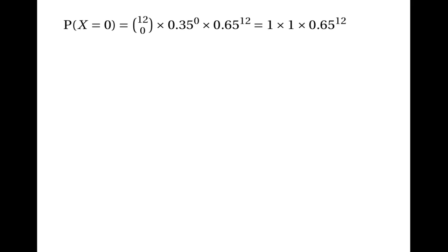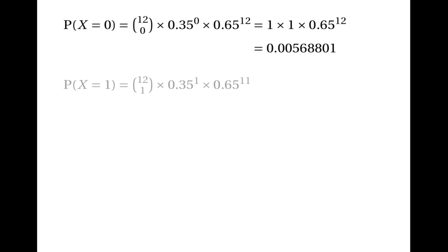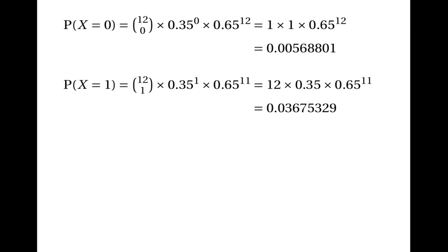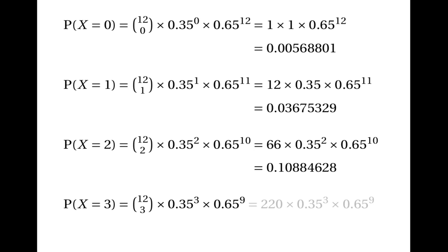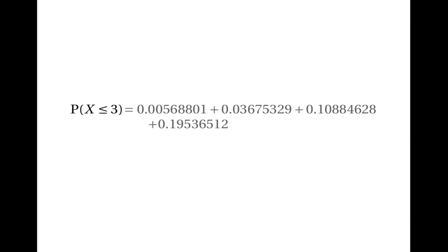Now we can calculate the probability of no successes: it's 1 times 1 times 0.65 to the power of 12, which is 0.00568801. We can also calculate the probability of 1 success, 2 successes and 3 successes. Finally, having calculated all four of these probabilities, we can add them together to find the probability that X is less than or equal to 3, which turns out to be 0.3467.